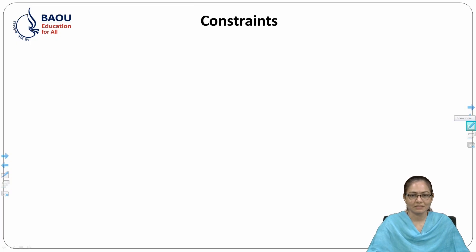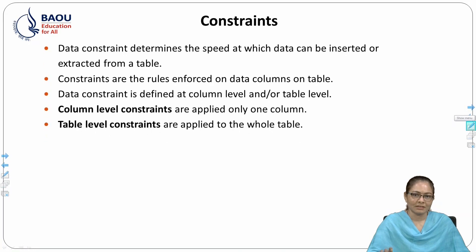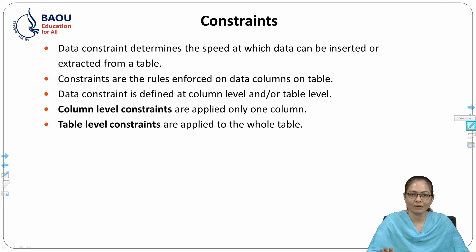Data constraints determine the rules enforced on data columns in a table. Using data constraints, we store proper data in the database. Data constraints are defined at a column level or a table level. Column-level constraints are applied to only one column and are defined at the time the column is declared, whereas table-level constraints are applied to the whole table and are defined at the end of the table.